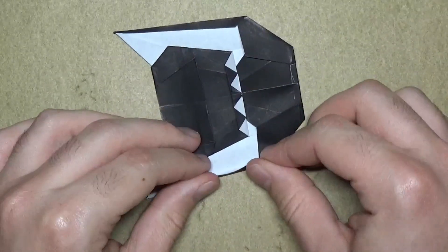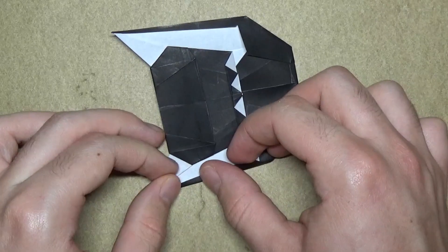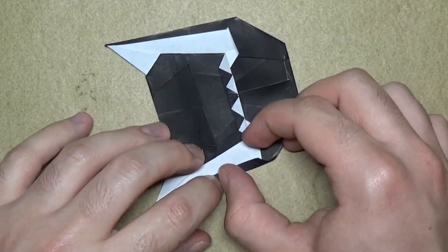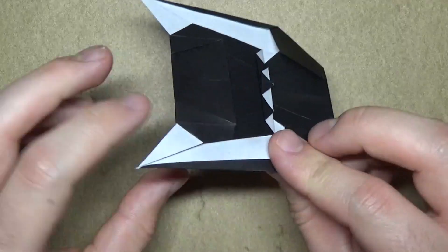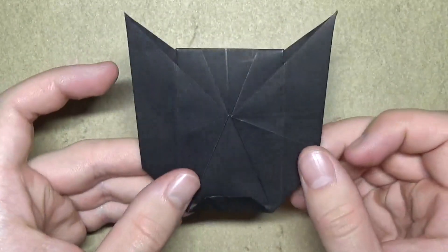And repeat on this side. I'm just doing this so there's not so many raw edges. That way it's a folded edge instead of a raw edge. Which looks more cleaner. Alright.